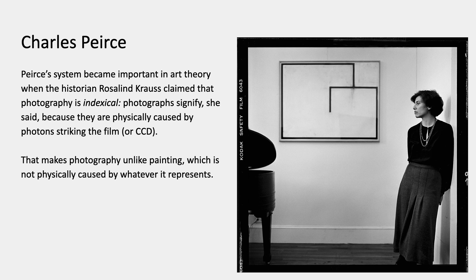Peirce's system became important in art theory when the art historian Rosalind Krauss claimed that photography, as a medium, is indexical. Photographs signify, she said, because they're physically caused by photons striking the film or the CCD. That makes photography unlike painting, which is not physically caused by whatever it represents — if I'm painting a landscape, there's a complicated chain of cause and effect through seeing, thinking, and moving my hand. Krauss's claim is that something fundamentally different happens in photography because the photograph is physically caused by the photons that directly strike it. It's a contentious but interesting claim, and it was an attempt to set photography apart from other media.